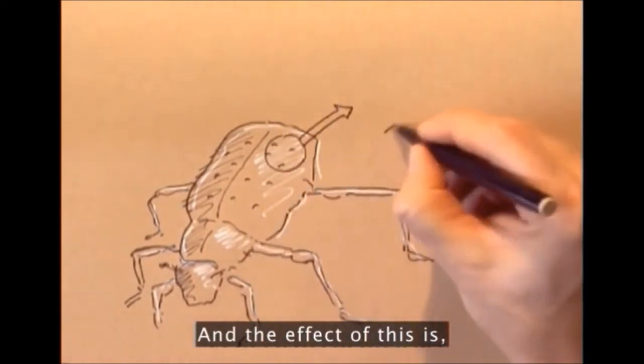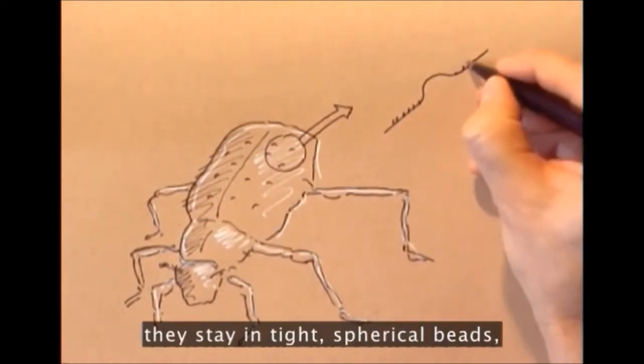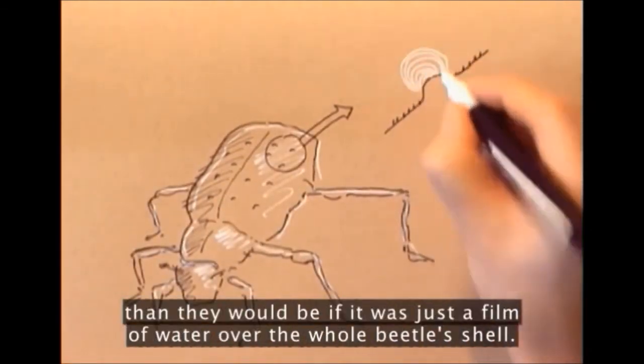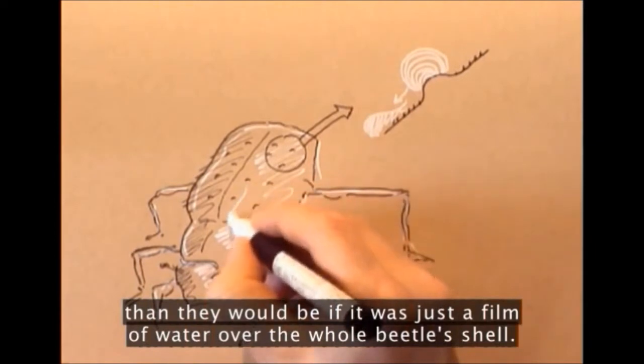The effect of this is that as the droplets start to form on the bumps, they stay in tight spherical beads, which means they're much more mobile than they would be if it was just a film of water over the whole beetle's shell.